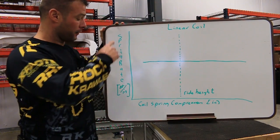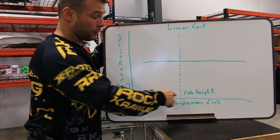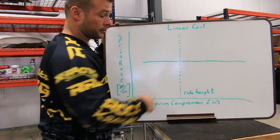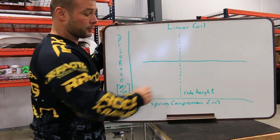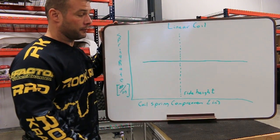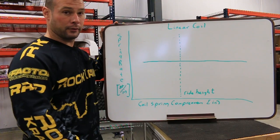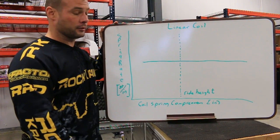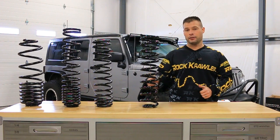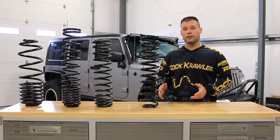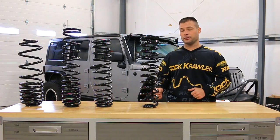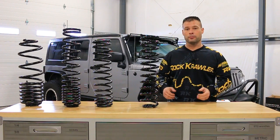Here we have a simple bar graph of spring rate versus coil spring compression. For a linear coil, your spring rate is perfectly constant all the way across. So if this is your ride height, on both sides of the ride height position, your spring rate is perfectly linear, making it constant throughout your entire suspension cycle. Additional aftermarket components that would enhance a standard linear rate coil spring would be items like sway bars or aftermarket hydraulic bump stops, to dial in on-road handling and true off-road performance.